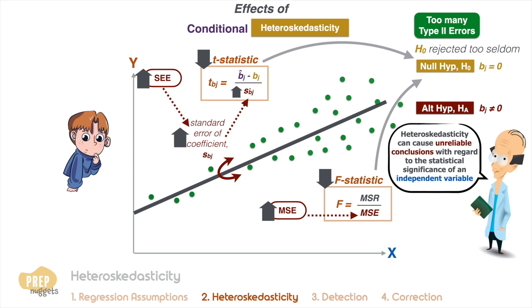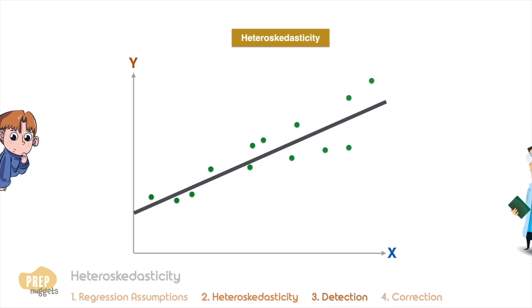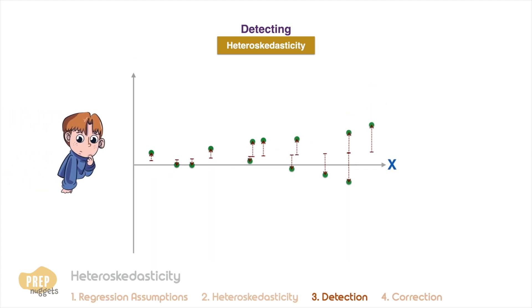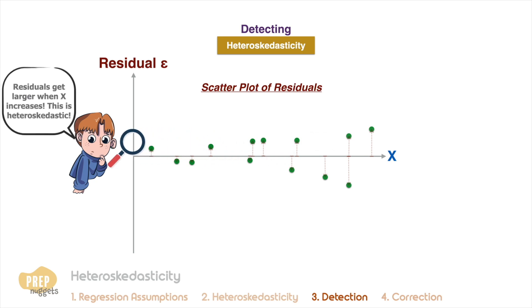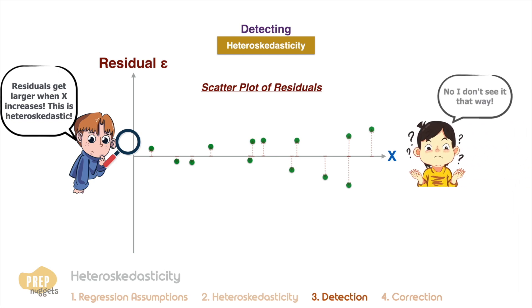Therefore, it's important to be able to detect and correct heteroscedasticity. One very straightforward way to detect heteroscedasticity is to examine the scatter plot of the residuals, which is to plot the errors against the independent variable of interest. A visual examination will help you determine if the data exhibits heteroscedasticity. However, sometimes this can be complicated by individual judgment.